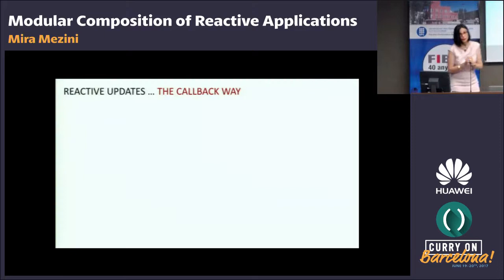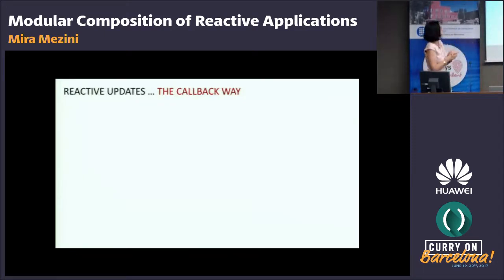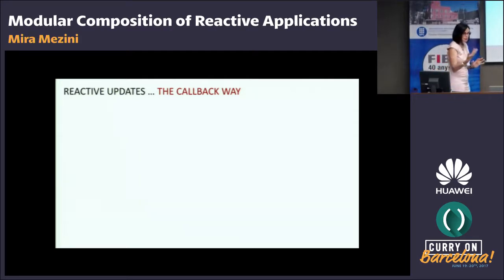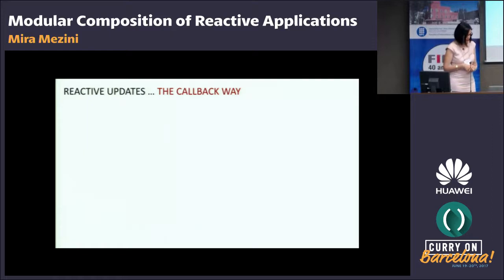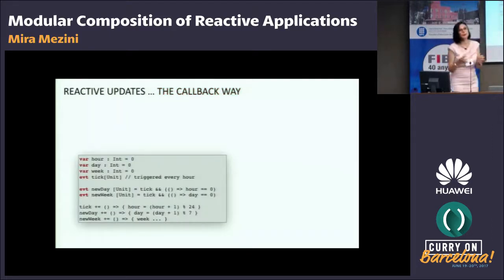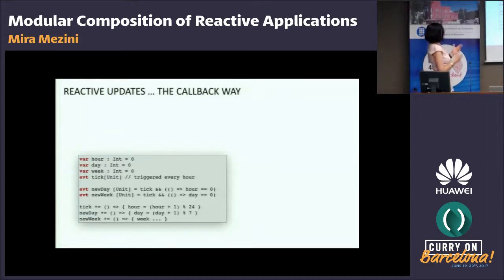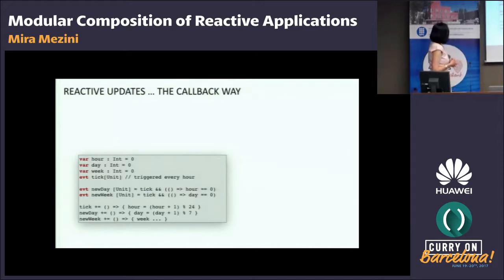Let's start with reactive updates. We still mostly have this old callback way to handle reactive updates to interesting changes. I'll tell you that that's not good. To explain why — to make it a hands-on explanation — let's look at a very small piece of code. What does it do?